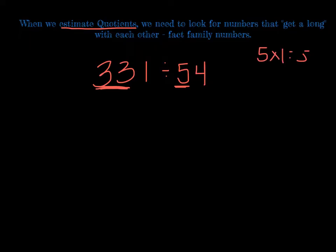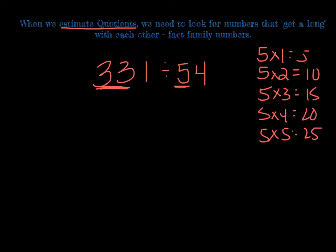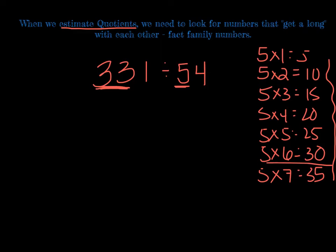5 times 1 is 5. Remember, I'm trying to get close to the number 33. 5 times 3 is 15. 5 times 4 is 20. We're getting closer. 5 times 5 is 25. Getting even closer yet. 5 times 6 is 30. Ooh, now we're super close. 5 times 7 is 35. Alright, now I've gone over 33, so I'm going to stop. Which of these fact families is pretty close to the number 33? I'd say probably this one right here.